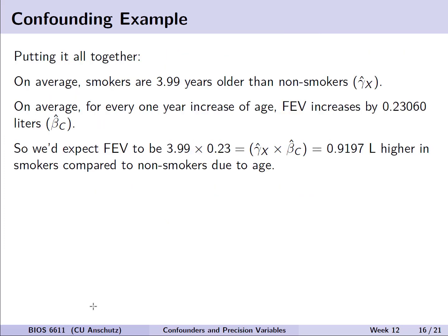Putting it all together: from the covariate model, gamma hat x tells us that on average smokers are 3.99 years older than non-smokers. From the adjusted model, beta hat c tells us that for every one-year increase in age, FEV is expected to increase by 0.2306 liters, accounting for smoking status. Combining these, we would expect FEV to be 0.9197 liters higher in smokers compared to non-smokers due to the confounding effects of age.